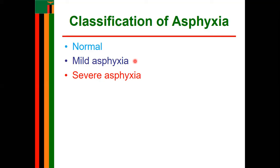Mild asphyxia has a score between 5 to 7. The heart rate may be severely depressed, ranging between 60 to 80 beats per minute. There is a short delay in onset of respiration. Muscle tone may be good and the baby may respond to stimuli, but the baby may be deeply cyanosed. There is no significant deprivation of oxygen during labor.